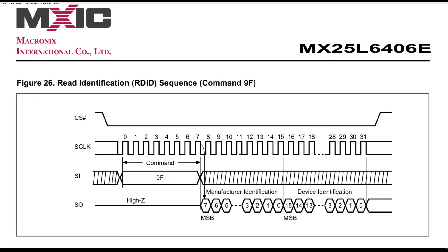One very useful command to send is readID. Each chip has a hardcoded ID, and if we ask nicely, it will return it to us. We already know how to interpret this: pull the CS line down, send the hex 0x9F command, and read data from the MISO line.